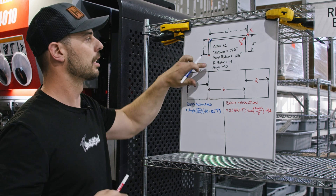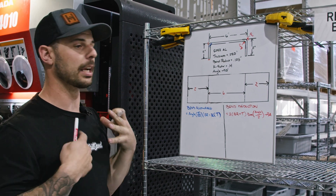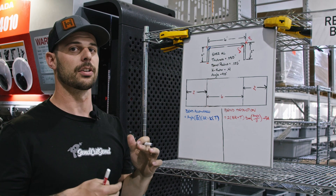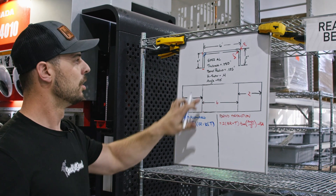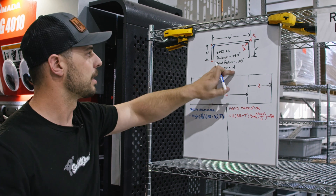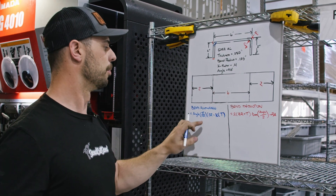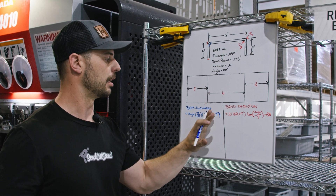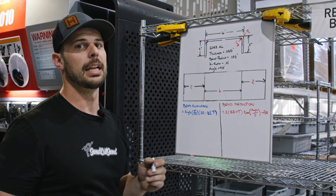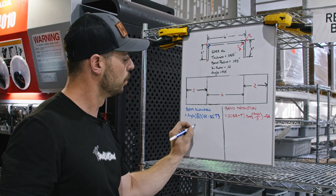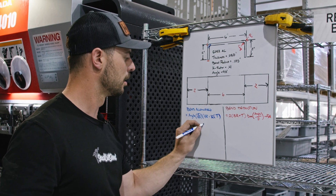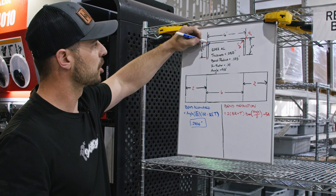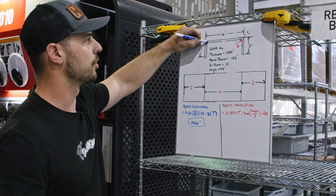In order to calculate the bend allowance, we need to know the k-factor, which for SendCutSend you can find for your specific material in the bend calculator on our website. We're going to use that 0.4 value that goes along with the 5052 aluminum. When we plug in the angle of 90 degrees and the rest of the equation, we end up getting a value of 0.2466 inches. This is the measurement of that neutral axis throughout the bend.